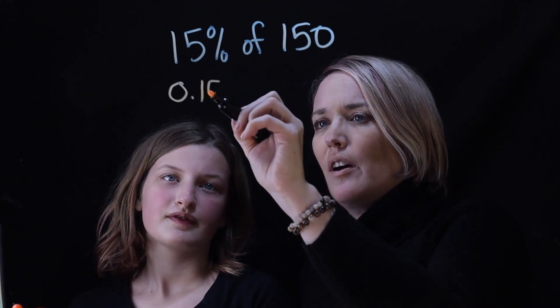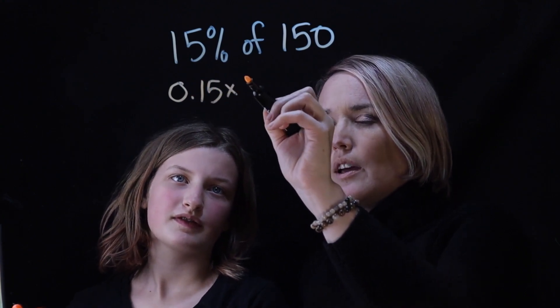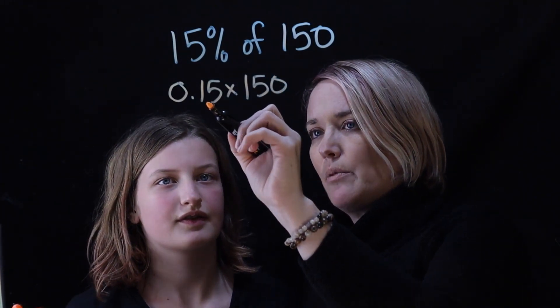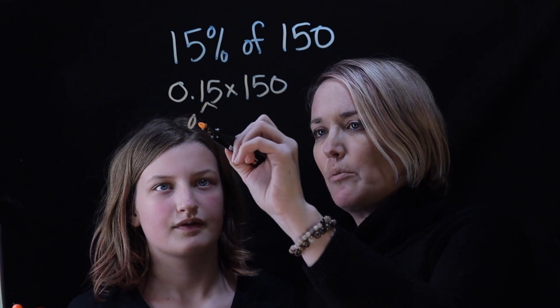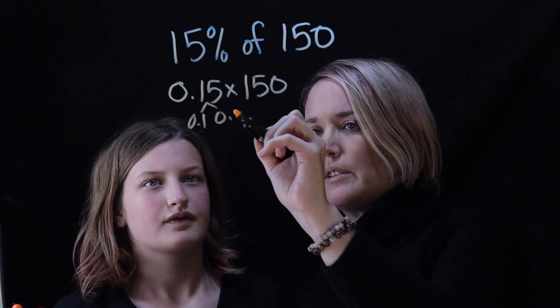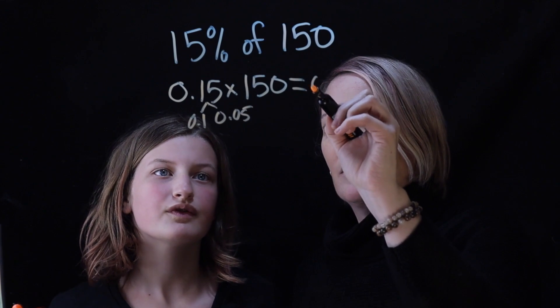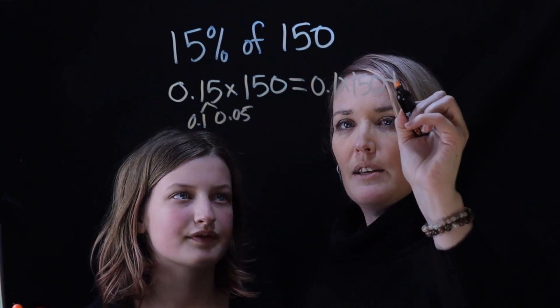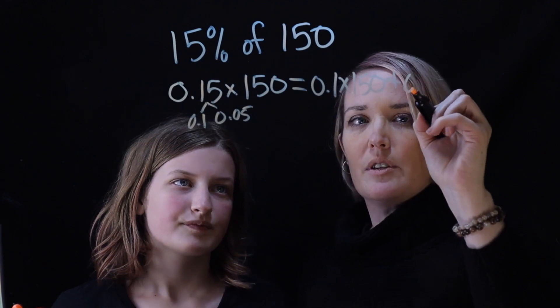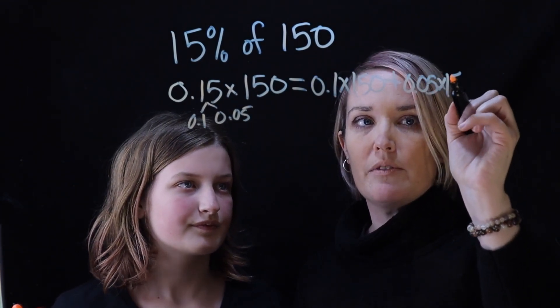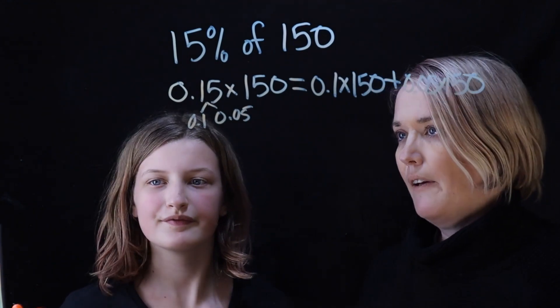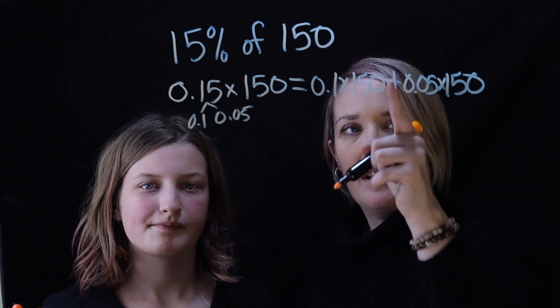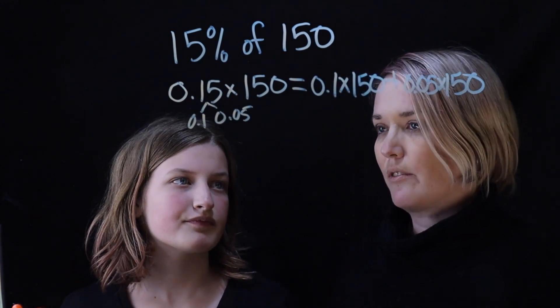0.15 times 150. And then if you split this, right, because you can split this into 0.1 and 0.05, right? So that you have 0.1 times 150 plus 0.05 times 150. Okay. So basically you're going to find 10 percent first. This is 10 percent of 150, and then you need to find 5 percent of 150.